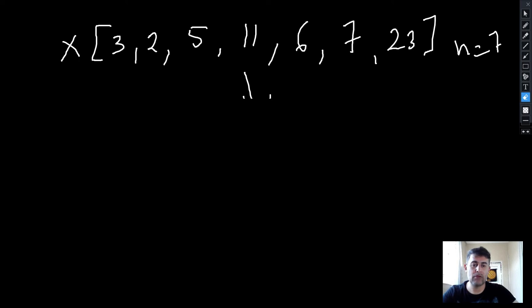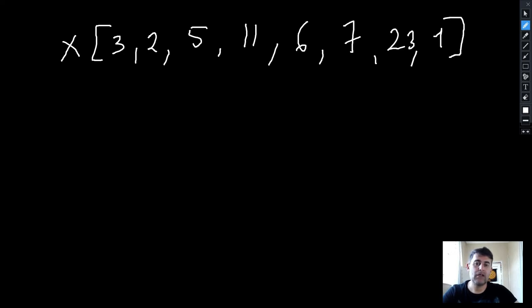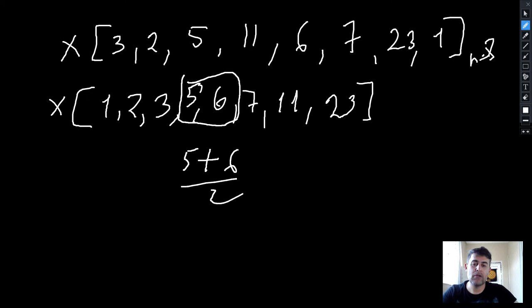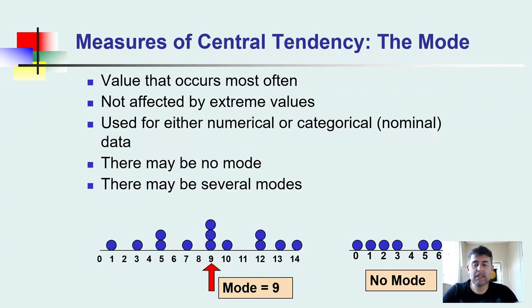Now another example where n equals 8, an even number. We arrange the data and rank them from smallest to largest. Then: 8 plus 1 divided by 2 equals 4.5, so we take the 4th and 5th values. We add those two values — 5 plus 6 — and divide by 2, giving us 5.5. That is our median.